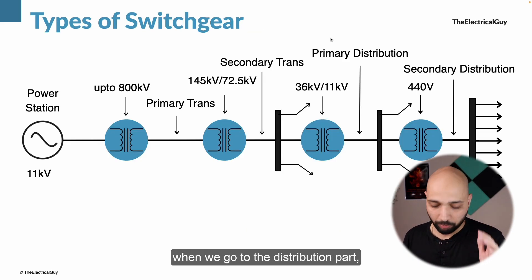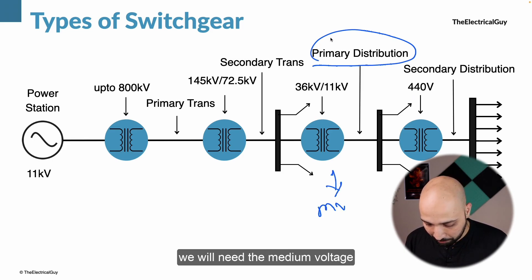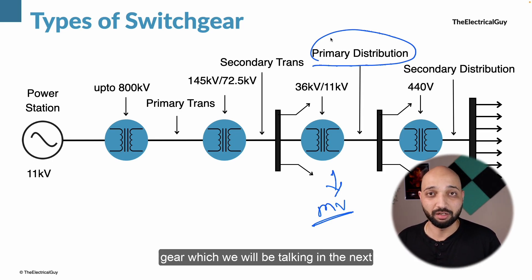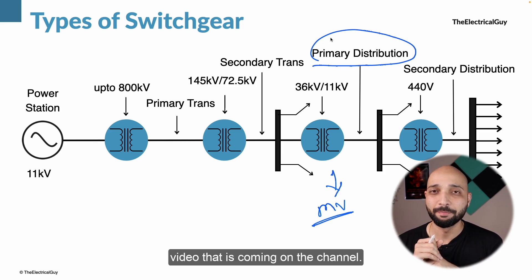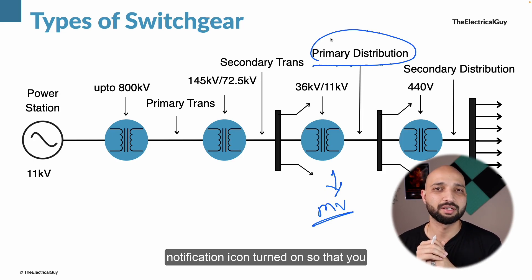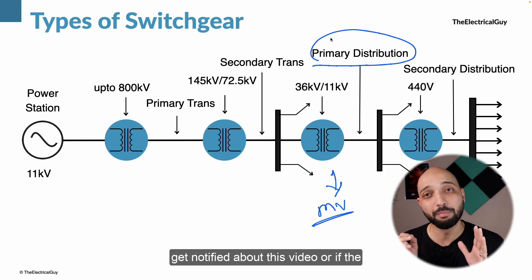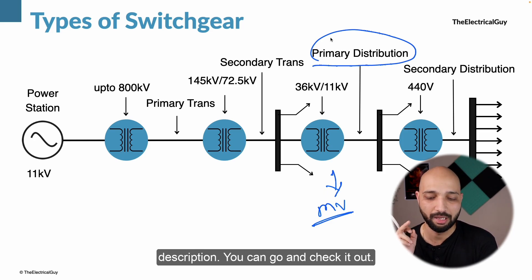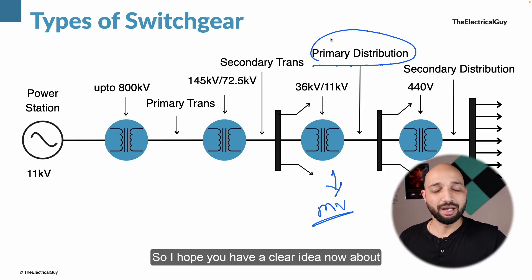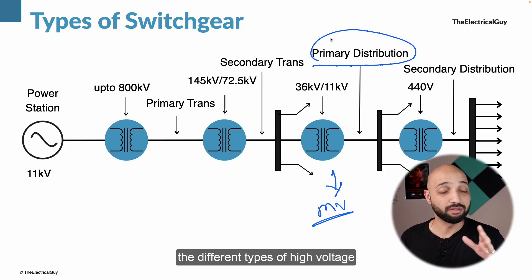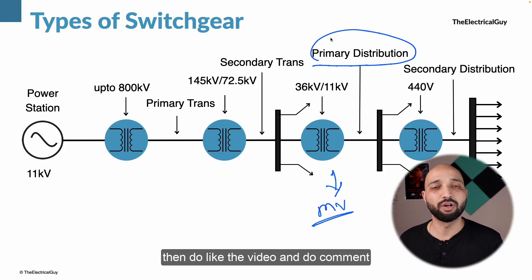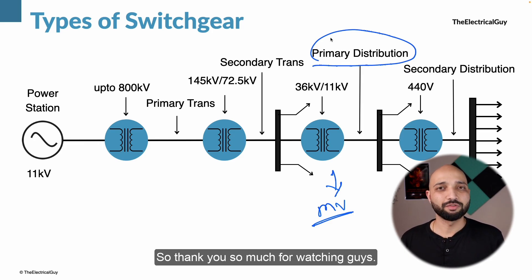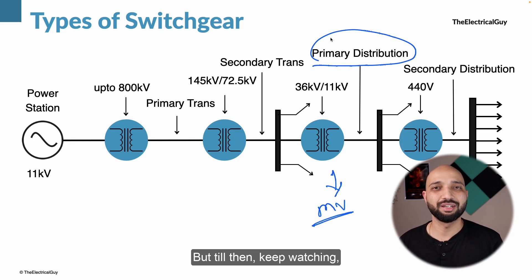When we move to the primary distribution, we will need the medium voltage switchgear, which has some differences from high voltage switchgear — that will be covered in the next video. If you haven't subscribed, make sure to subscribe with the bell notification turned on. I hope you now have a clear idea about the different types of high voltage switchgear. If you found the video helpful, do like it and comment 'helpful' below. Thank you for watching — keep watching, keep learning.